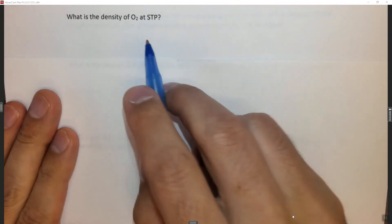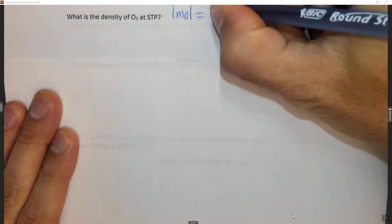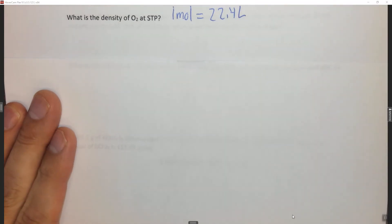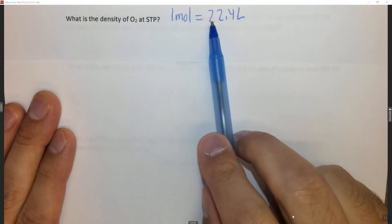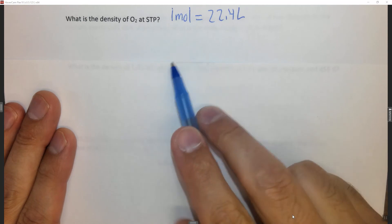One thing that is important to remember is that one mole of any gas is 22.4 liters at STP, at standard temperature and pressure. This is not true at all temperatures and pressures, but it is true at standard temperature and pressure.